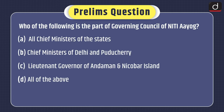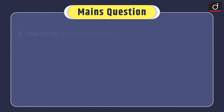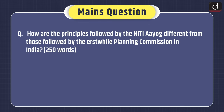Now it's time for the practice questions. Prelims question: who of the following is part of the Governing Council of NITI Aayog? All Chief Ministers of the states, Chief Ministers of Delhi and Puducherry, Lieutenant Governor of Andaman and Nicobar Island, or all of the above? And the mains question: how are the principles followed by NITI Aayog different from those followed by the erstwhile Planning Commission in India? That's all for today. Stay tuned for the next episode. Thanks for watching.